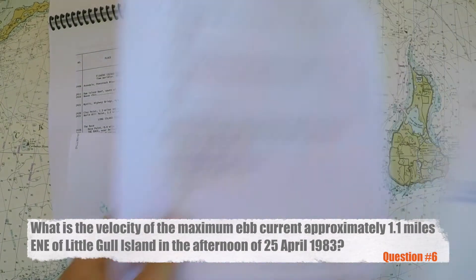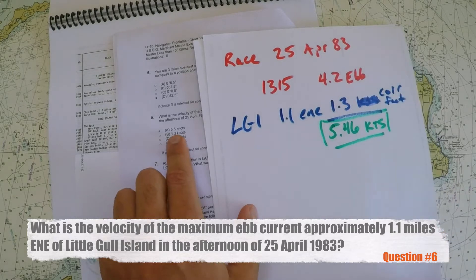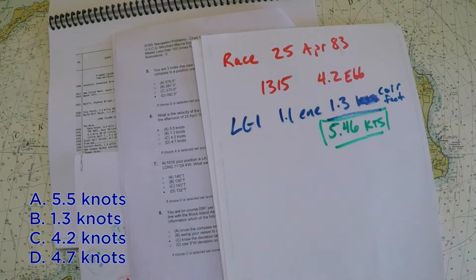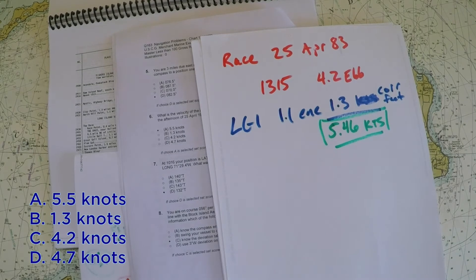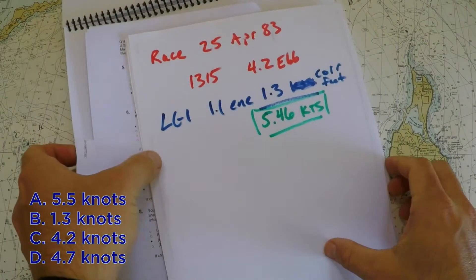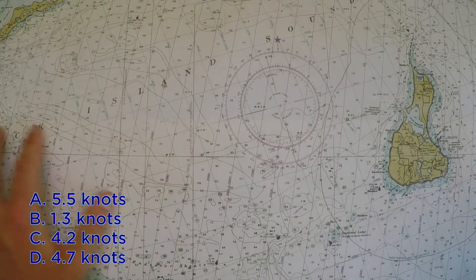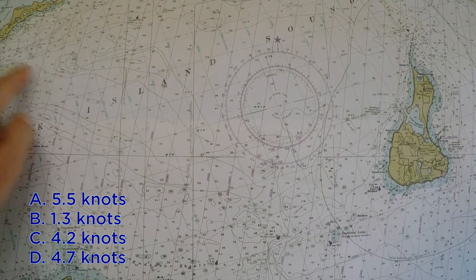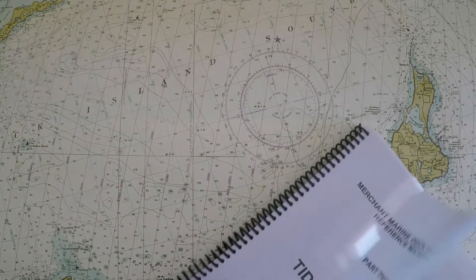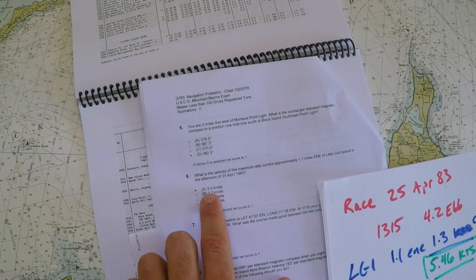Looking at the exam answer choices, the closest answer is 5.5 knots. You might be inclined to discard that because we don't often see currents at 5.5 knots, but in that area — Block Island Sound through The Race — there are really intense currents. So our final answer is Choice A, 5.5 knots.